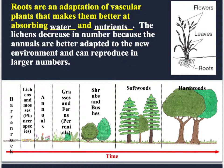This slide goes over the fact that roots are adaptations of plants that allow them to get water and nutrients very easily. Something like a lichen, which has no roots, won't be able to live for very long because there's no way for it to get water and nutrients.